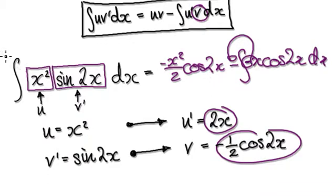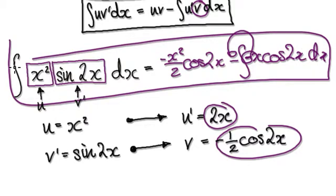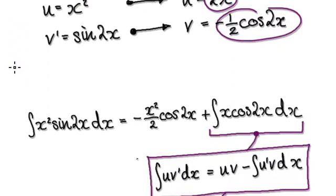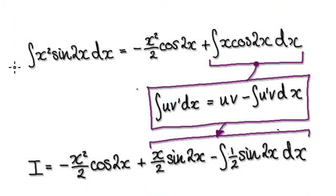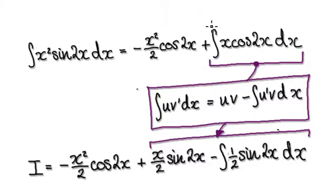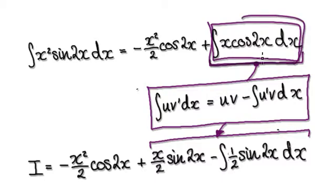So anyway, this whole thing here would then become this. So now we need to repeat the integration by parts process again.